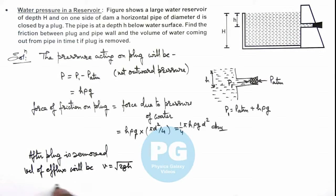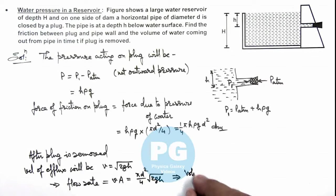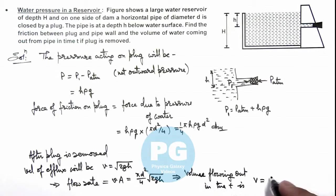This implies the flow rate of water will be equal to velocity multiplied by cross-sectional area, which is π d² / 4 multiplied by √(2gh). If we calculate volume flowing out in time t, this volume is the flow rate multiplied by time, so this can be simply written as π d² / 4 multiplied by √(2gh) multiplied by t. That is the result of this problem.